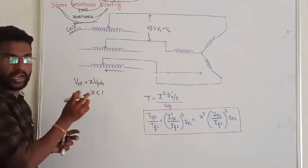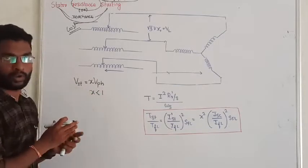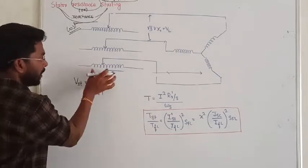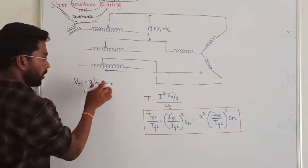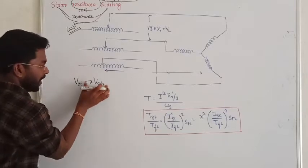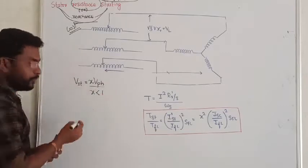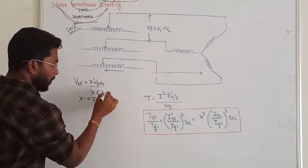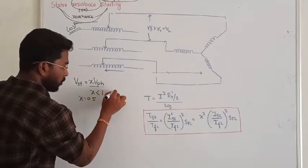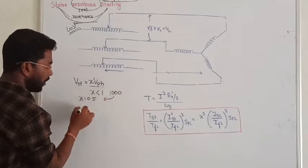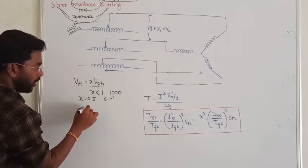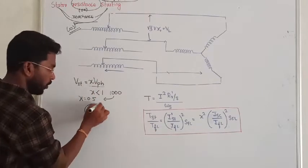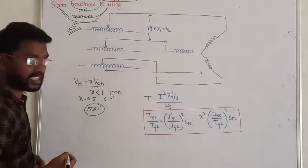The value of X is less than 1 and in a certain range. So the starting voltage is X times the rated voltage. For example, if X is 0.5 and the rated voltage is 1000V, then the applied starting voltage will become only 500V. That is how we reduce the starting voltage.